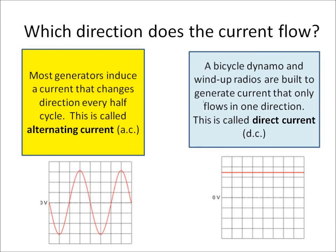Most generators induce a current that changes direction — going one way and then the other way — and this is called an alternating current. That's shown in the diagram on the bottom left.